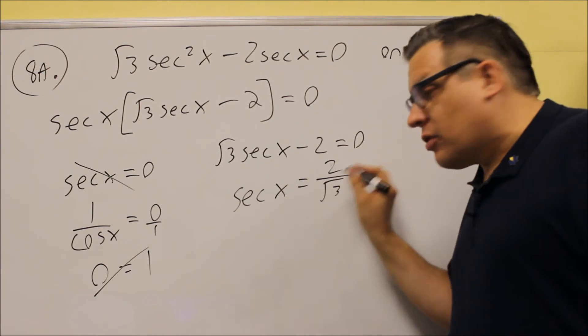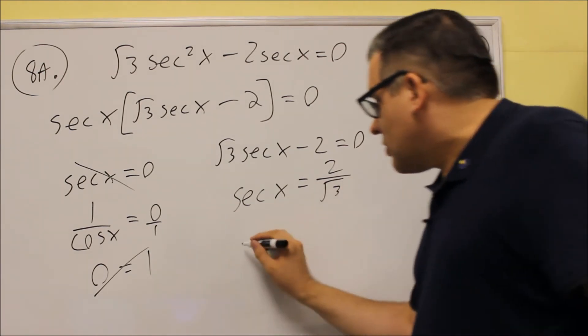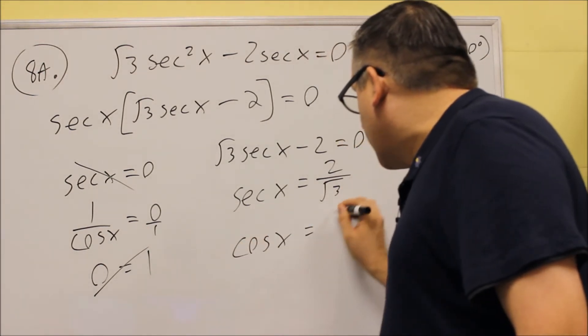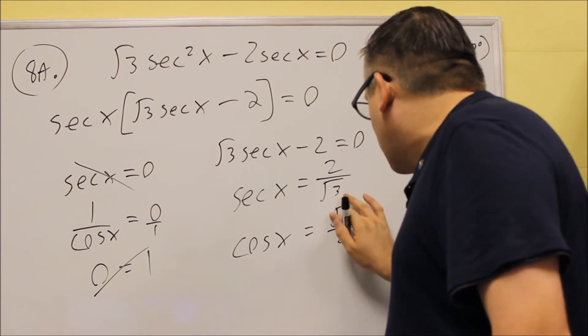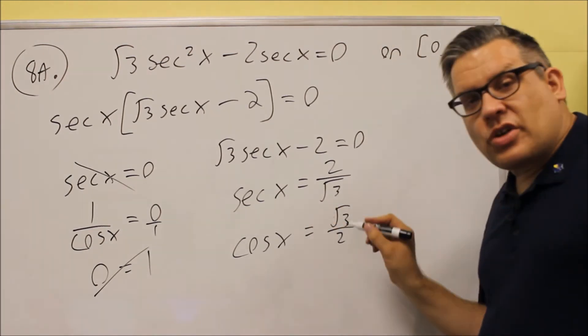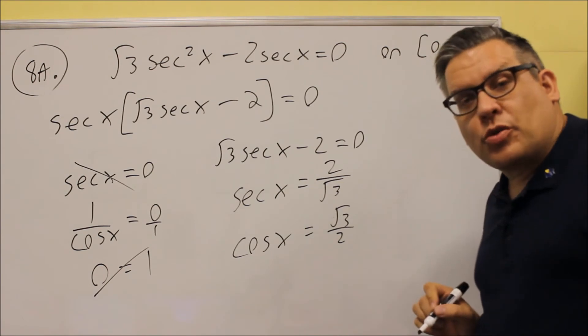Now cosine is the reciprocal of this one. So if I have secant and I want to find cosine, all I have to do is just take the reciprocal. So cosine is going to be equal to square root of three over two.